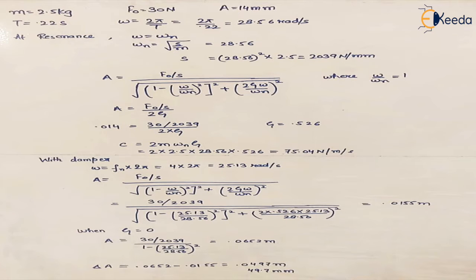So firstly we write all the given data, we are given the mass, F0 is given that means for the static deflection force is given the amplitude. So it says that this is the amplitude, right? So amplitude is given which is 14 mm, time duration is given and we know omega is 2 pi upon t so we can calculate the value of omega.